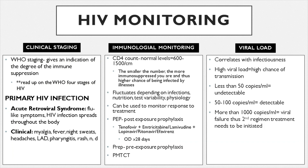Under immunological monitoring: PEP (post-exposure prophylaxis) must be taken within 72 hours after exposure to HIV-positive contact and given for 28 days. PrEP (pre-exposure prophylaxis) is usually taken by discordant couples — where one partner is HIV positive and the other negative — to protect the HIV-negative partner. Viral load correlates with infectiousness — the higher the viral load, the higher the chance of transmission. Less than 50 copies per milliliter means an undetectable viral load, which most people aim for. More than 1,000 copies per milliliter means viral failure, requiring second-line regimen treatment.